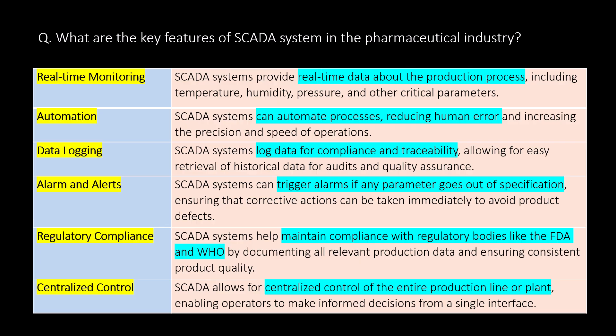What are the key features of a SCADA system in the pharmaceutical industry? First, real-time monitoring — SCADA provides real-time data about production processes. Second, automation — SCADA can automate processes, reducing human errors. Third, data logging — SCADA systems log data for compliance and traceability. Fourth, alarms and alerts — SCADA can trigger alarms if any parameter goes out of specification.